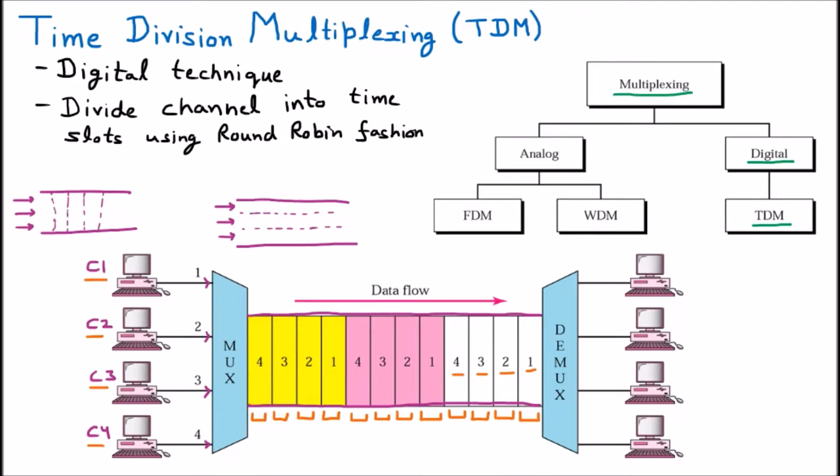This is called the round robin fashion — everybody is given an equal chance and they are given a time slice or time slot. During their time slot, they have their chance to speak. If they are not speaking in their chance, it will come later on. Chances are given to everybody: 1, 2, 3, 4, 1, 2, 3, 4. If the chance of the first person is coming, only then the first can send; other people cannot send at that time. This is called the division of time — that is time division multiplexing. The 5 minutes I assumed as an example; it can be 2 minutes or even milliseconds.